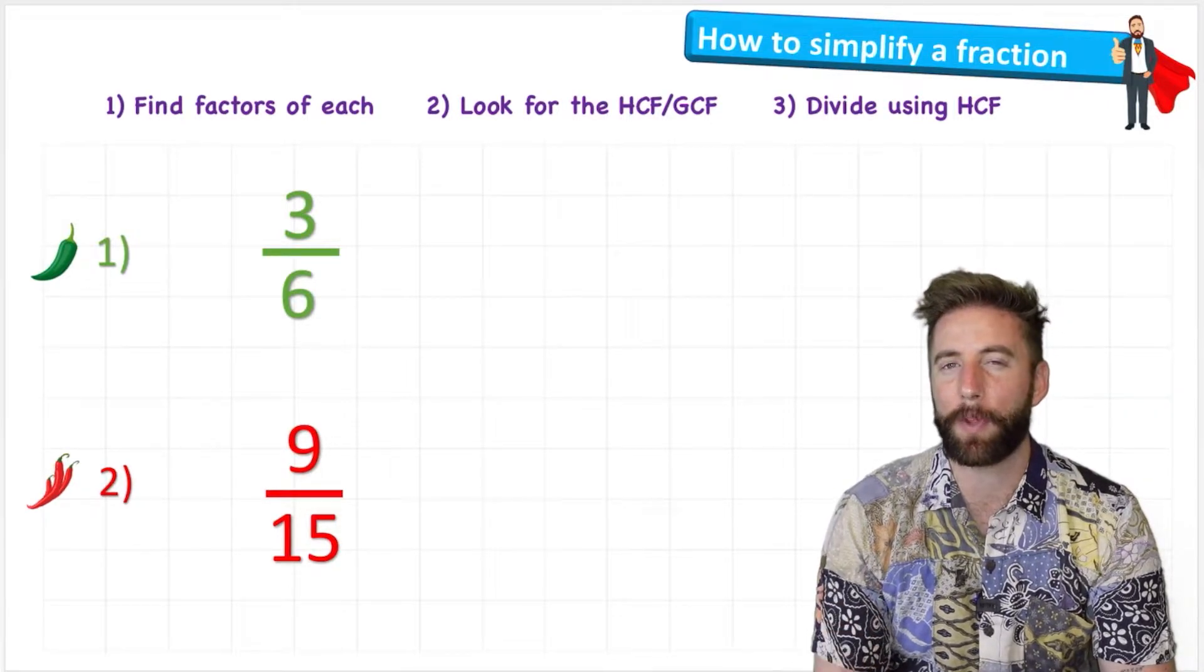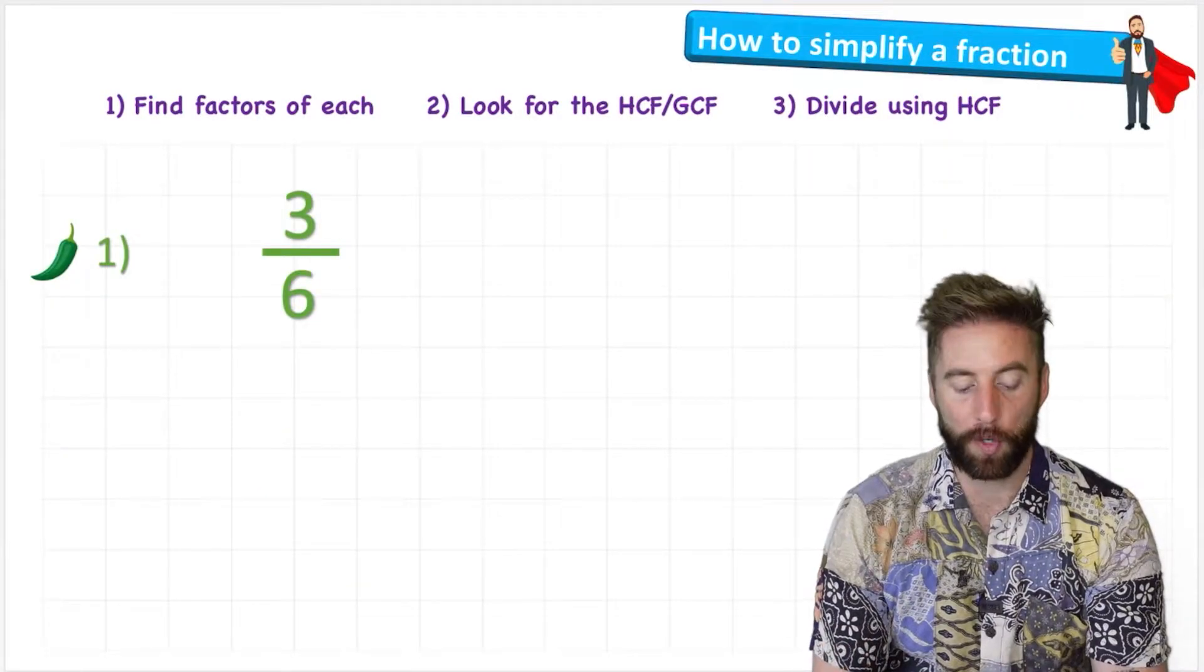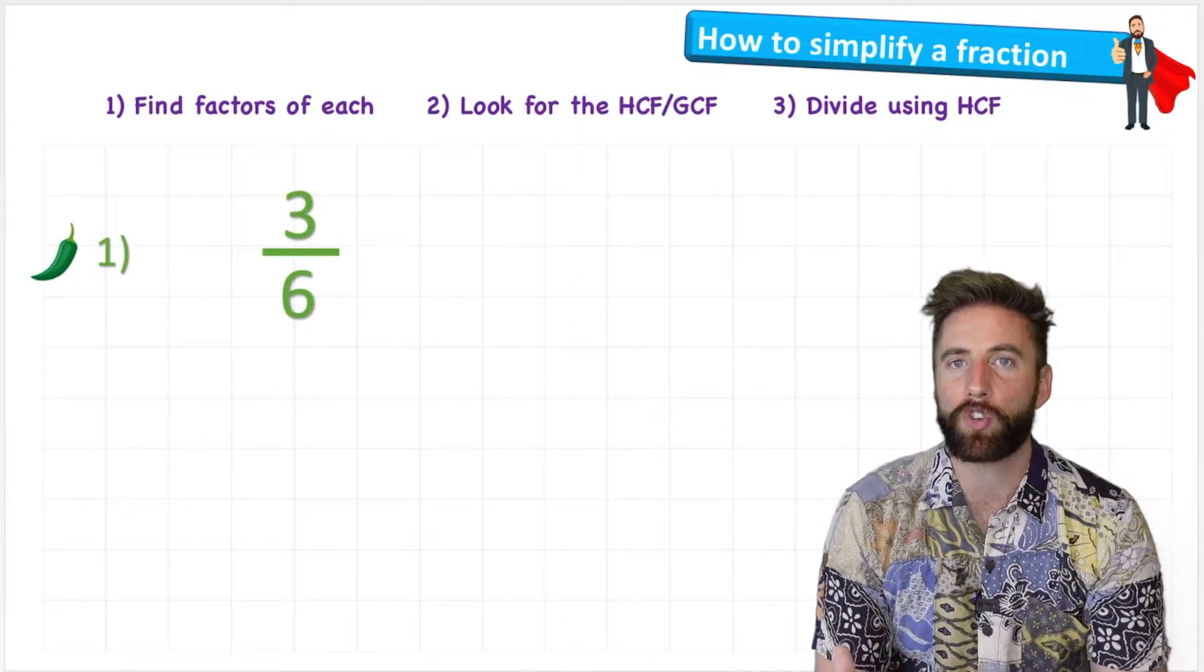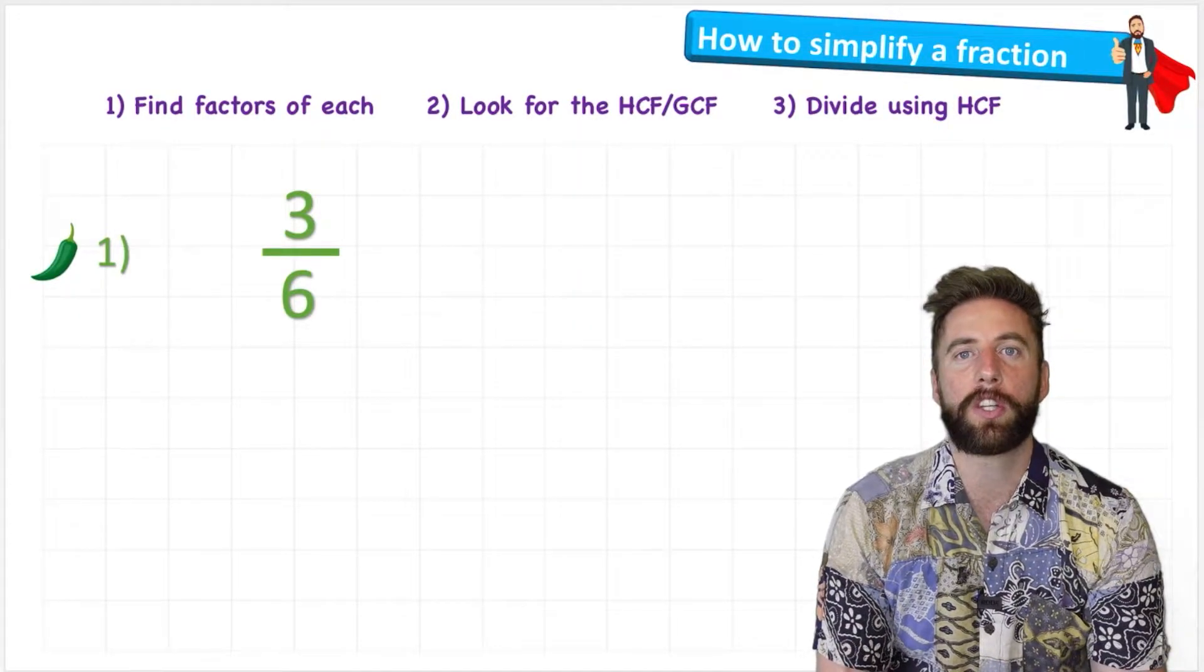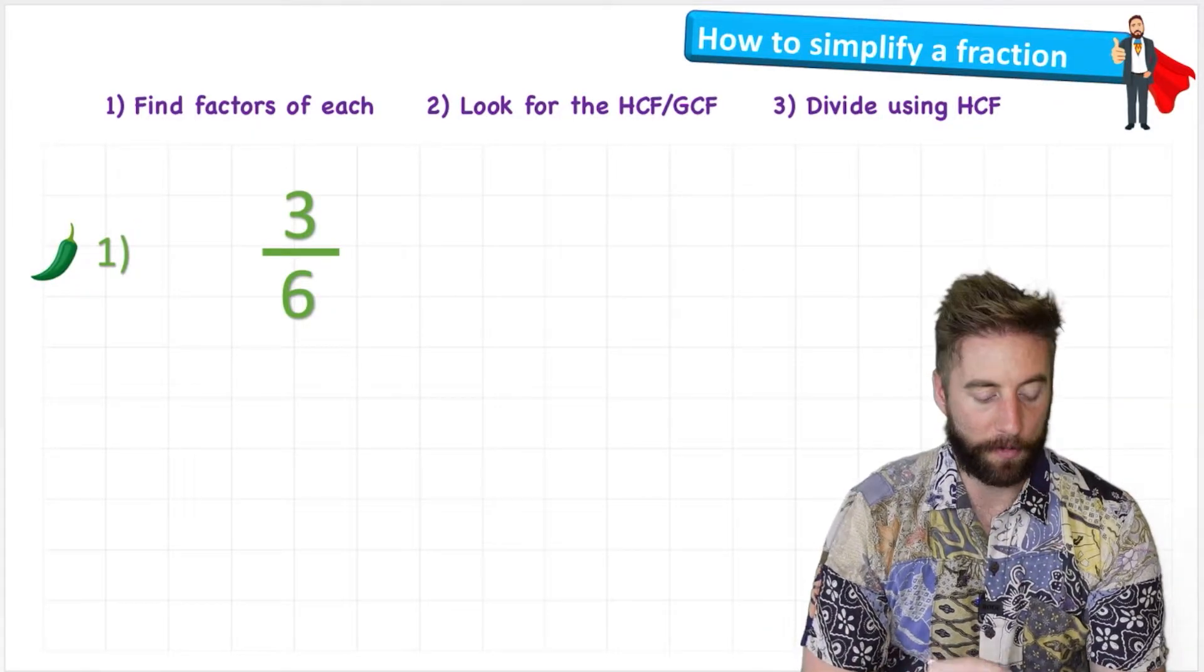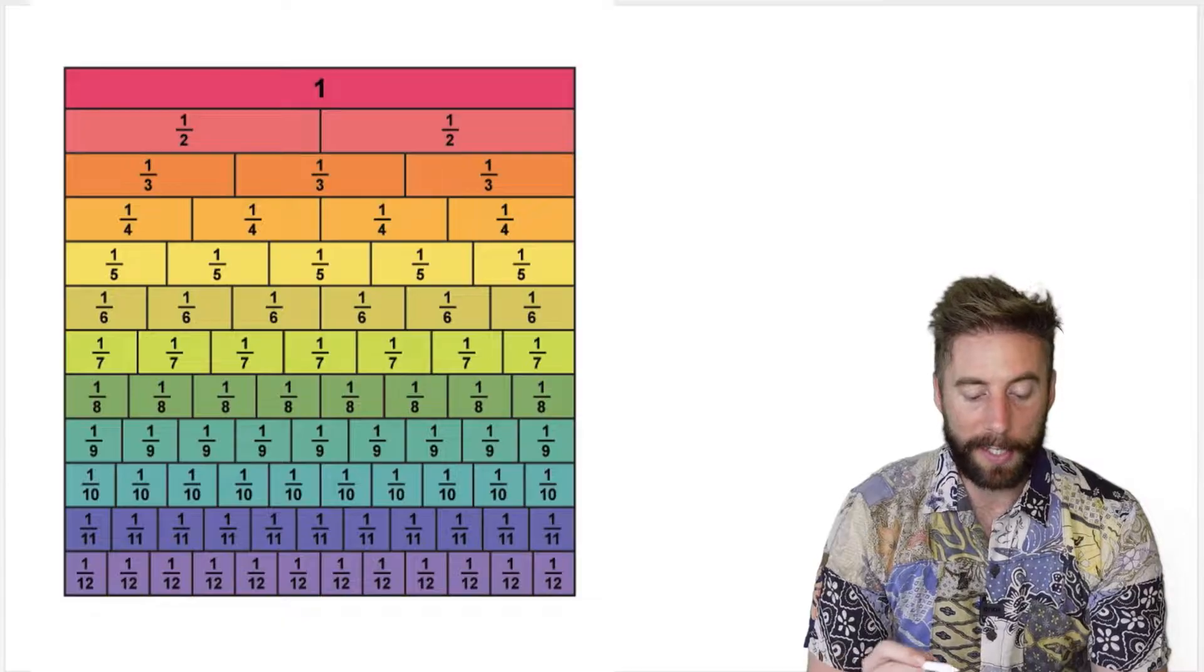Let's see what that looks like. Let's start here with question one: three sixths. What we're doing when we're simplifying a fraction is we're trying to find the fraction using the smallest digits to represent the fraction. Before we start, let me show you a fraction wall and show you what I mean.